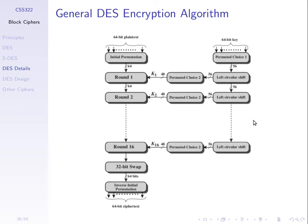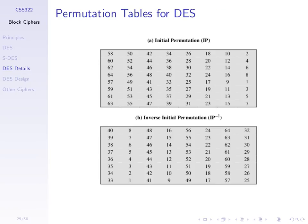The initial permutation is defined and known — known to the attacker as well as those encrypting. Since we have 64 bits, it tells us how to rearrange them: the 58th bit goes into the first position, the 50th bit into the second position, and so on.